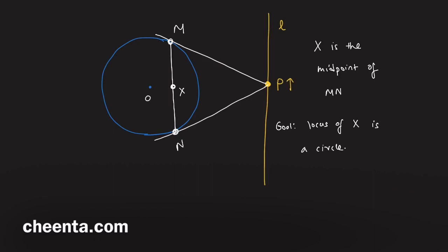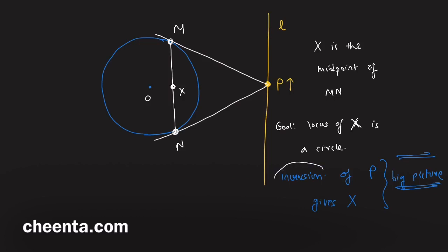As discussed in the previous lecture, this is an example of inversion — inversion of P gives X. You don't need to know this big picture to solve this problem, but inversion appears in many other problems so it's good to understand it.